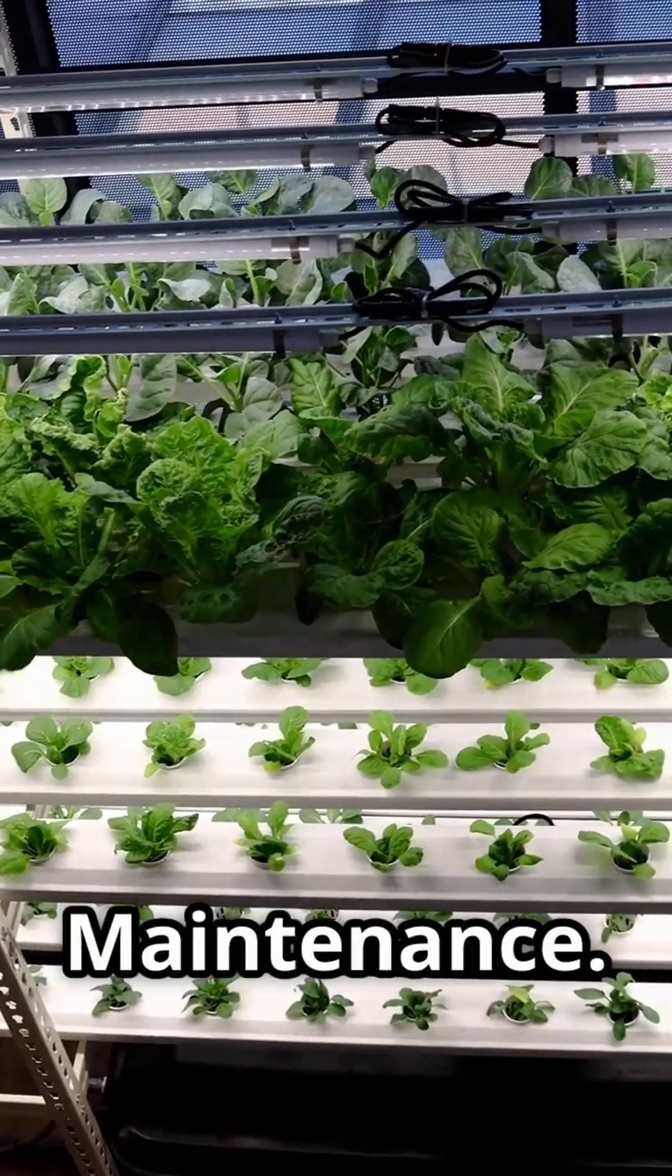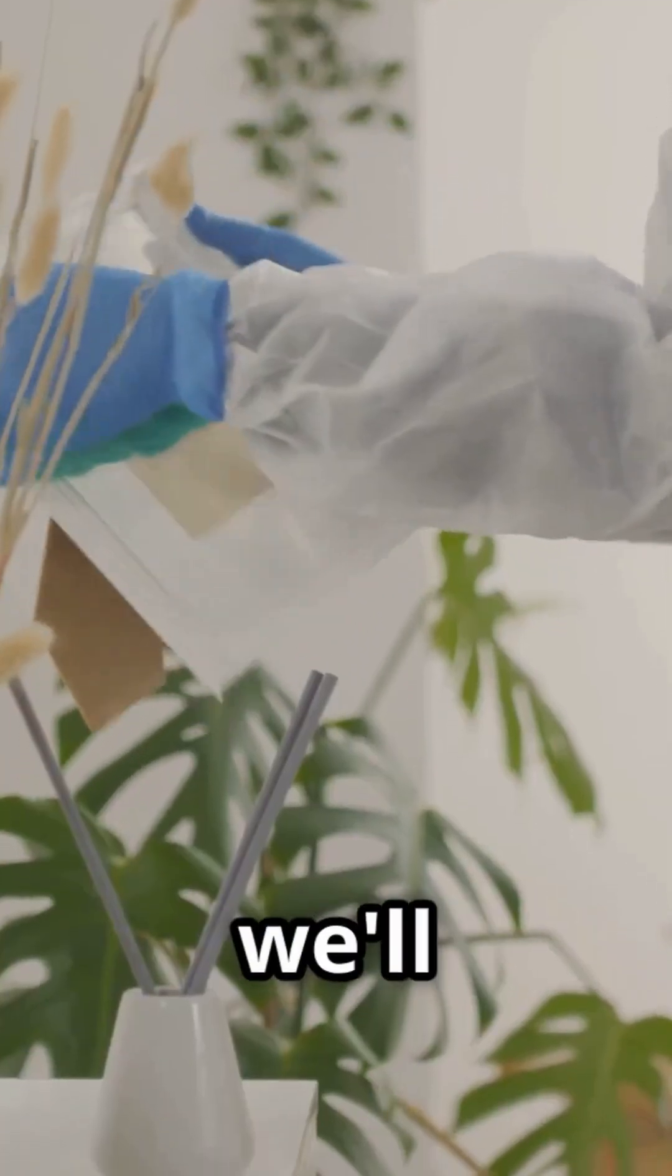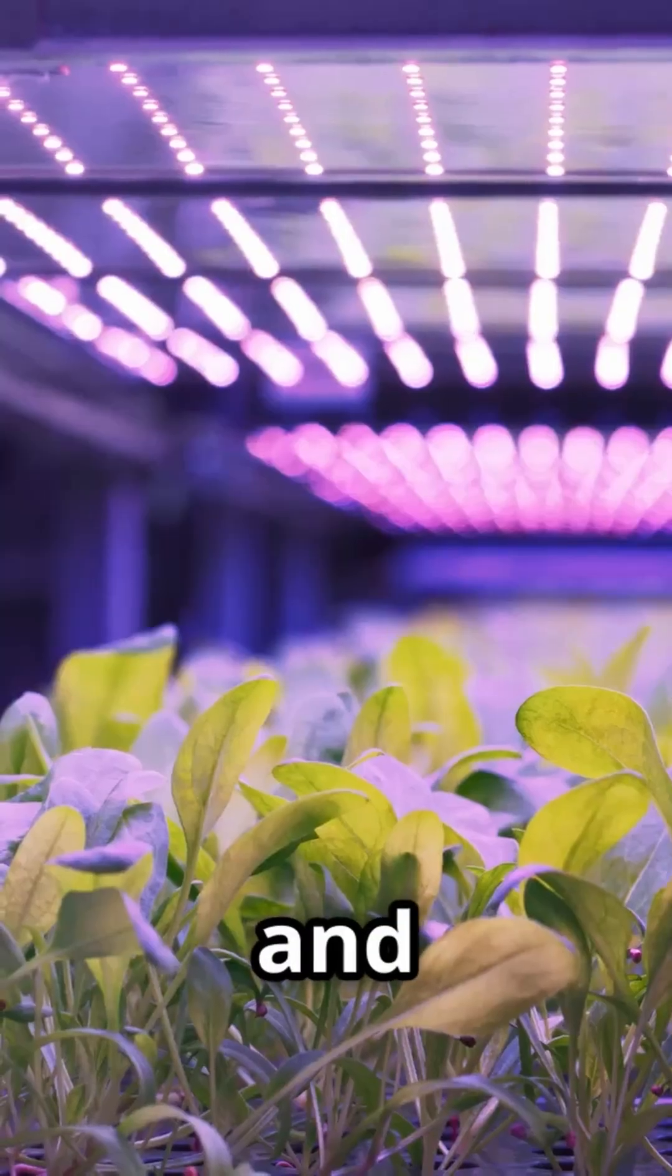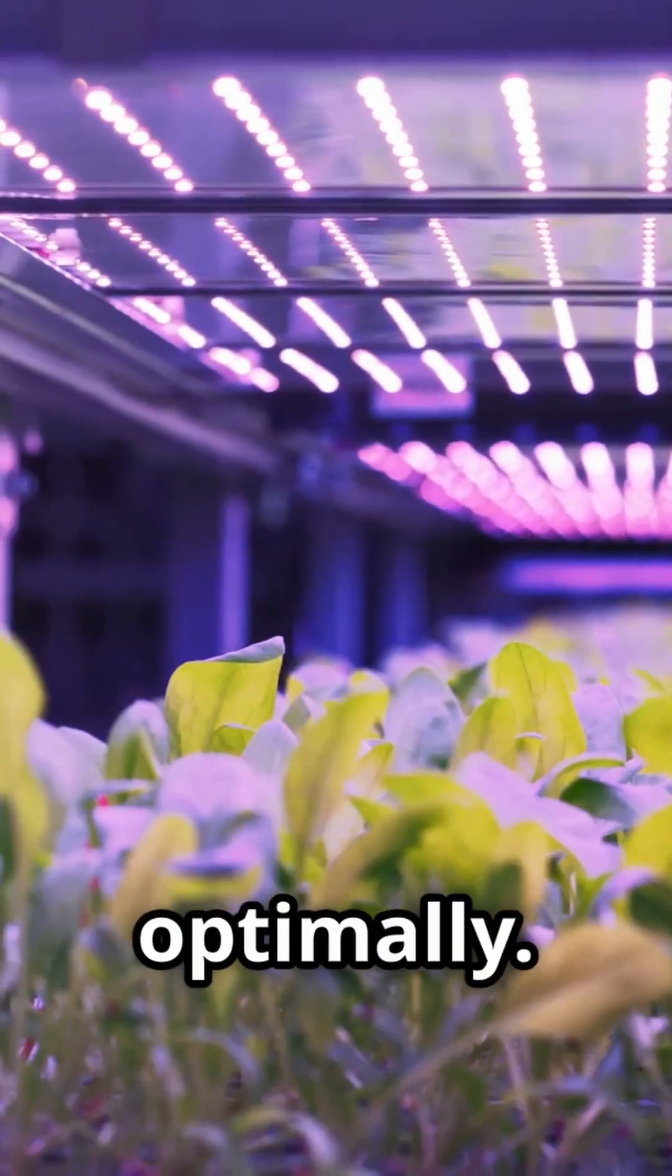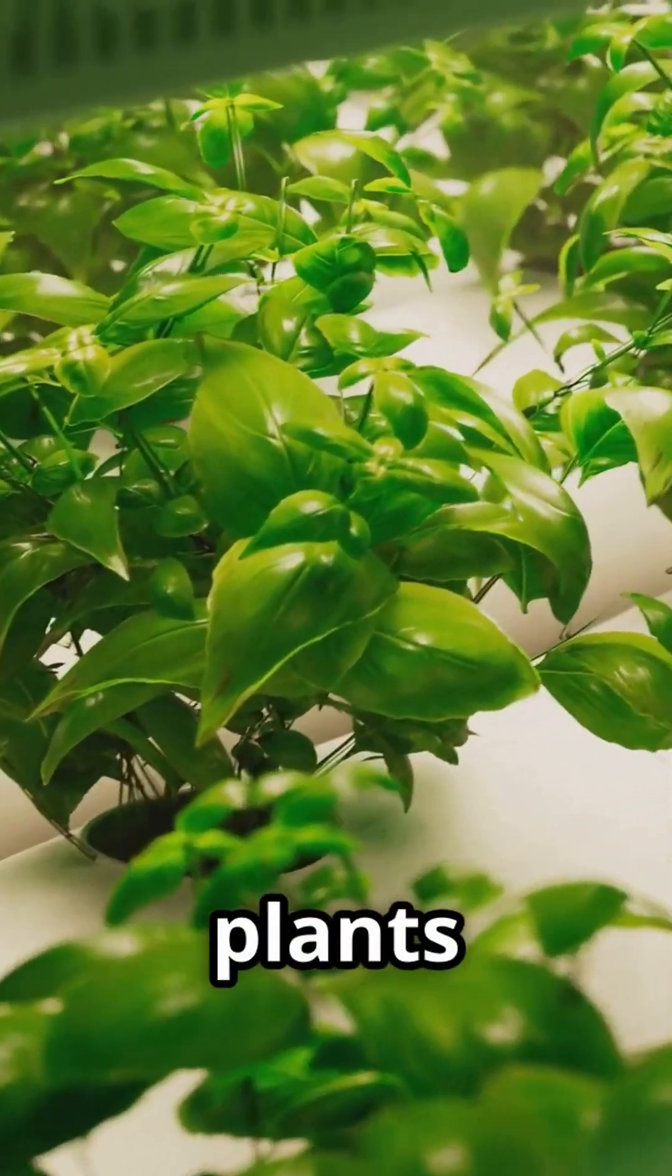Hydroponic system maintenance. Maintaining your hydroponic system is crucial for long-term success. In this chapter we'll cover how to clean and sterilize your system, prevent algae growth, and ensure your equipment is functioning optimally. Proper maintenance will help you avoid common pitfalls and keep your plants healthy and productive.